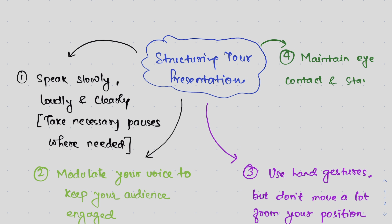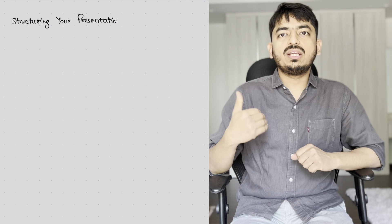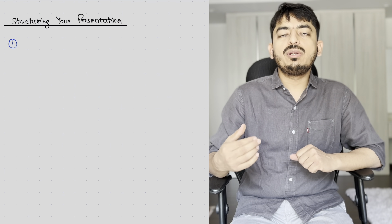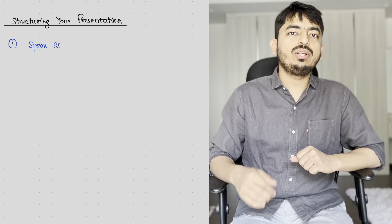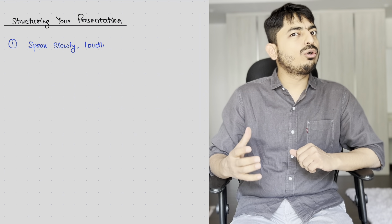Let's start with the first one — speaking loudly, clearly, firmly, and slowly, and also incorporating pauses in your communication. Communication requires your audience to listen, interpret, and analyze what you're saying for them to absorb it fully. So if you speak loudly and clearly, your audience will be able to hear you very properly.